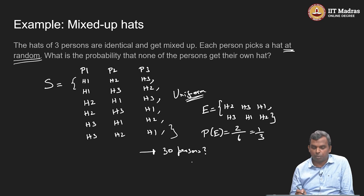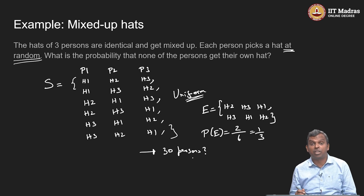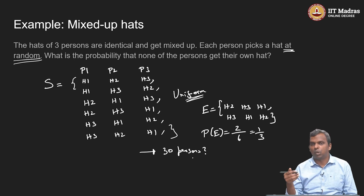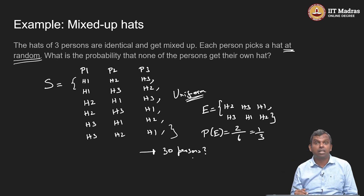That is the end of this lecture. We saw the notion of a distribution — in particular, the example of a uniform distribution and how to work with it: write down the outcomes, write down the favorable outcomes, and the number of favorable outcomes divided by total number of outcomes is the probability of an event under the uniform distribution. Thank you very much.